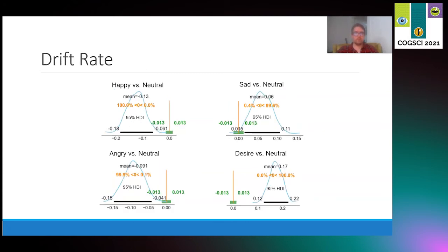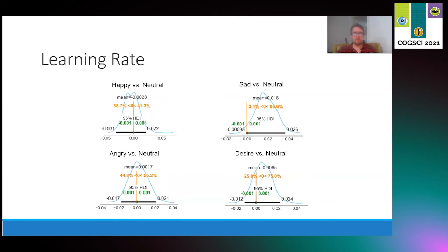Turning to drift rate or our formalization to the extent to which expected value differences play a role in evidence accumulation, we find mostly similar but weaker effects. We found that the happy condition weighted expected values as less important as evidence than the neutral condition did, as did the angry condition. On the other hand, the sad and desire conditions weighted expected value more as evidence than the neutral condition did. Taken together with the boundary separation findings, this suggests that people in the happy condition were most likely to make fast but noisy decisions, whereas people who were in the sad and desire conditions were more prone to making slow but accurate decisions. Anger interestingly required more evidence, but their evidence accumulation processes were less focused on value.